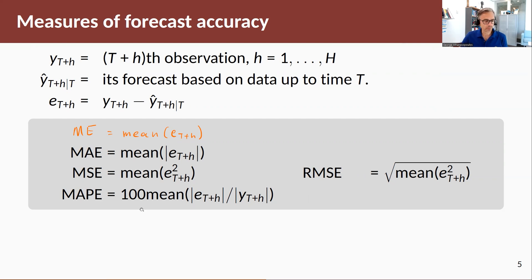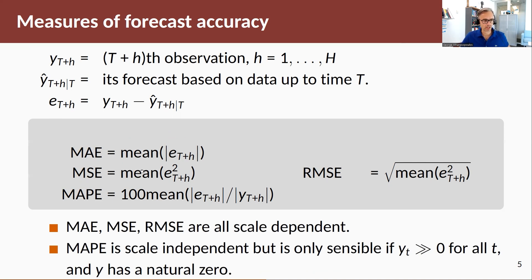Another interesting measure is the mean absolute percentage error (MAPE). You take the errors, take the absolute values, divide by the actual observation, and multiply by 100 — making it a percentage term. The big advantage is that it takes away the scale of your errors. Mean absolute error, mean squared error, and root mean squared error are scale-dependent, which is fine for one time series, but problematic if you're evaluating a model across 10 or 20 time series with different scales.